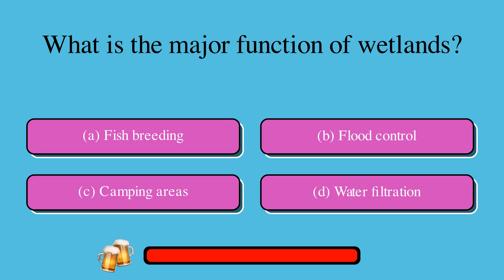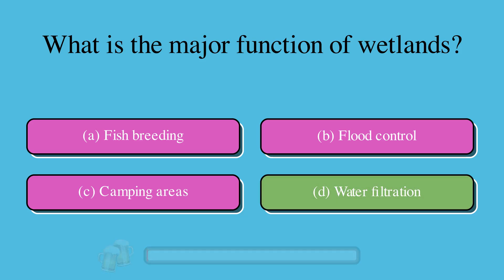What is the major function of wetlands? A. Fish breeding, B. Flood control, C. Camping areas, or D. Water filtration? The correct answer is D. Water filtration.